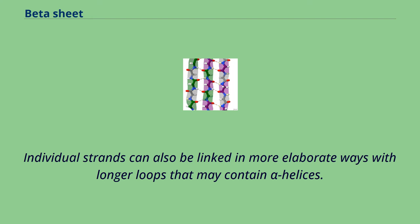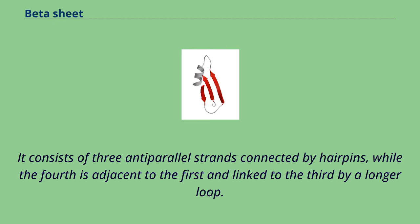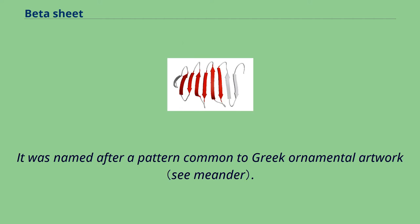Individual strands can also be linked in more elaborate ways with longer loops that may contain alpha helices. The Greek key motif consists of four adjacent anti-parallel strands and their linking loops. It consists of three anti-parallel strands connected by hairpins, while the fourth is adjacent to the first and linked to the third by a longer loop. This type of structure forms easily during the protein folding process. It was named after a pattern common to Greek ornamental artwork.